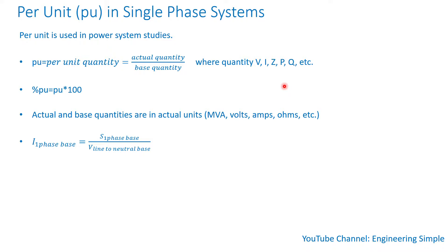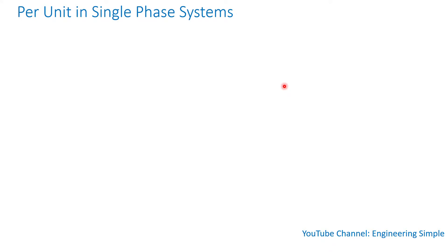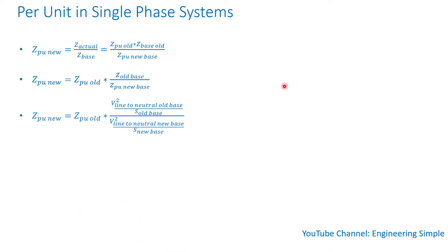For the single-phase case, the base current is equal to the complex power in VA, MVA, or KVA divided by the line-to-neutral voltage. If you want to calculate the base impedance, it's the line-to-neutral voltage squared divided by the apparent or complex power.